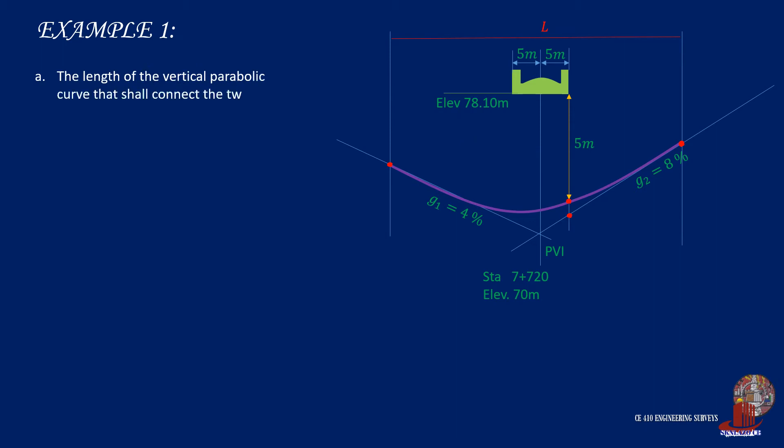For the requirement of the length of the vertical parabolic curve, the two formulas to work on will be the function with the external distance h and the ratio and proportion of y and x. Starting with h, which is L over 8 times the absolute value of G1 less G2, plug the grades to have the function h equals 0.015L. Then with the ratio and proportion of the verticals and horizontals, that would be y is to x squared is equal to h is to half of L squared. Replace h with 0.015L to simplify it as y is to x squared is equal to 0.06 is to L.